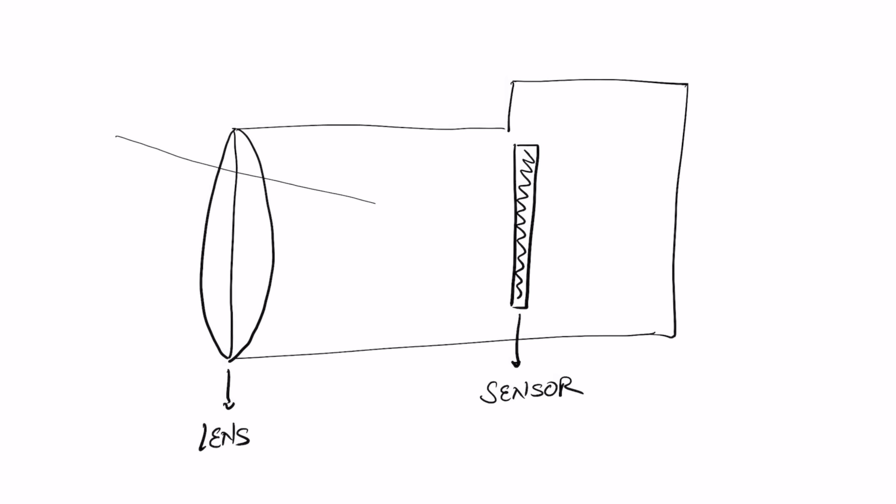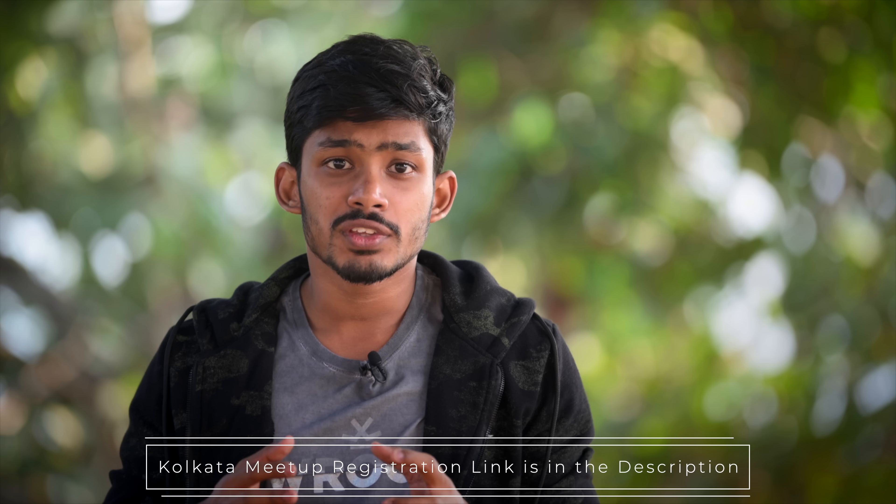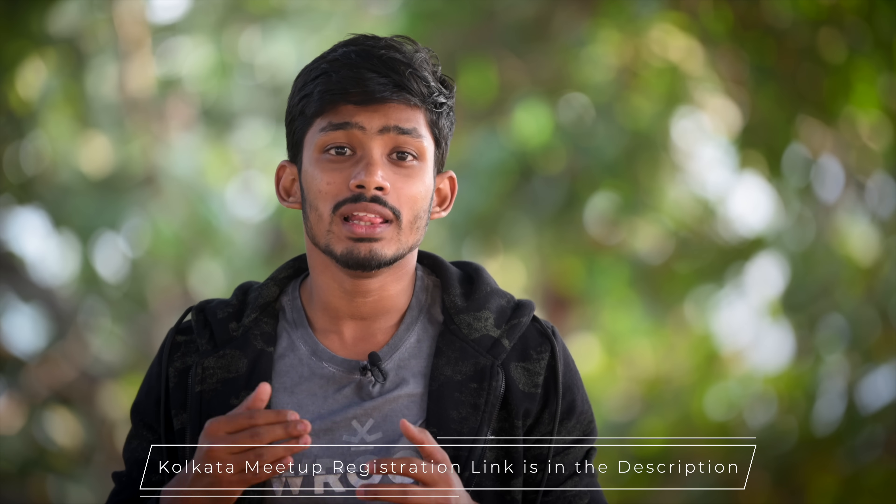First, let's understand what is exactly focal length. Focal length is basically the distance from the optical center to the sensor of your camera. Focal length is not dependent on the length of your lens — meaning you can have two different lenses of different length but of the same focal length. Depending on the focal length, the lens is named after it. If you are using a 50mm lens, it means the focal length is 50mm. The focal length of the lens is irrespective of the camera body you are using — the focal length of the lens remains the same.